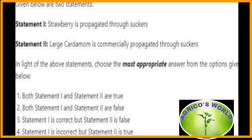Given below are two statements. Statement 1: strawberry is propagated through suckers — this is true. Statement 2: large cardamom is commercially propagated through suckers — this is also true. So from the given options we can choose the first option: both statement 1 and statement 2 are true.